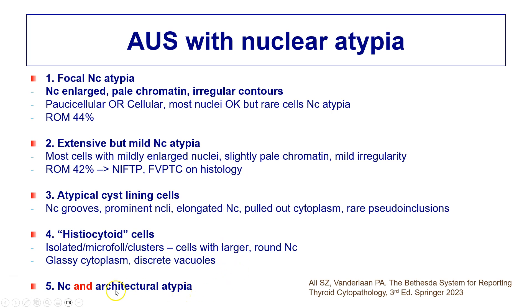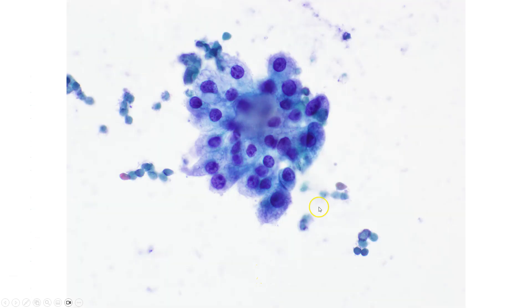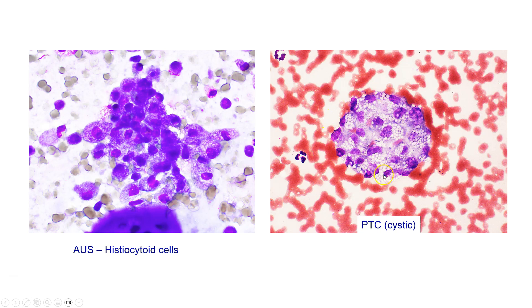This is also inclusive of cases with both nuclear and architectural atypia. Here is an example of atypical histiocytoid cells where the cytoplasm is quite bubbly and the cells are very cohesive — not how histiocytes are usually seen, as they are typically more dispersed. Here again are the atypical histiocytoid cells on air-dried smears, compared with a cluster from a confirmed PTC. In cystic PTC, we often see these types of clusters where cells have bubbly cytoplasm.